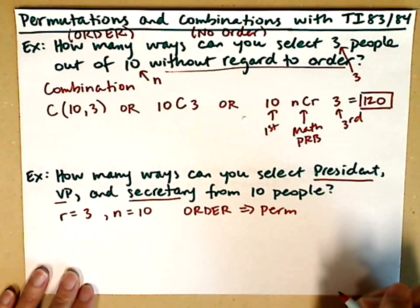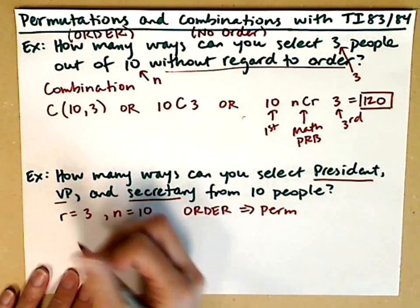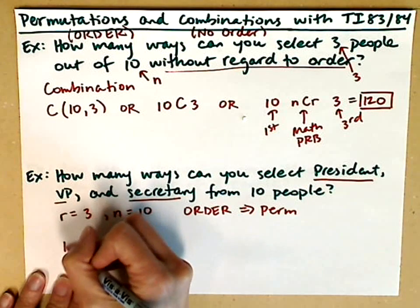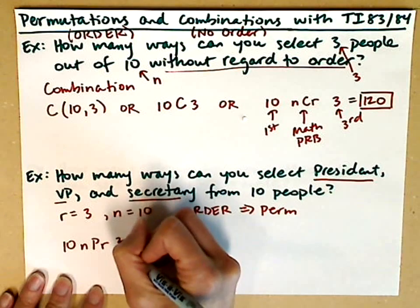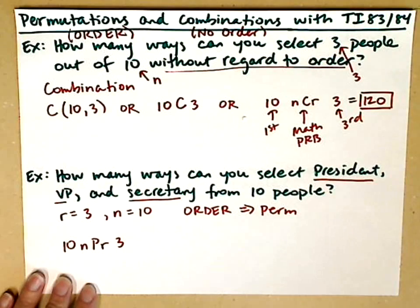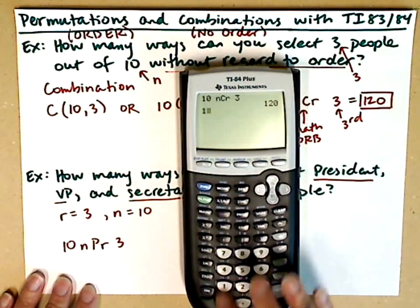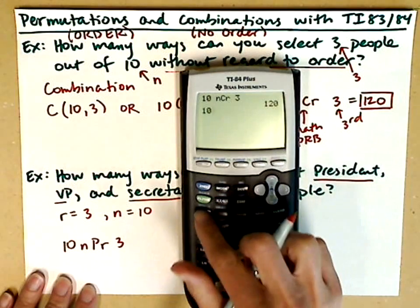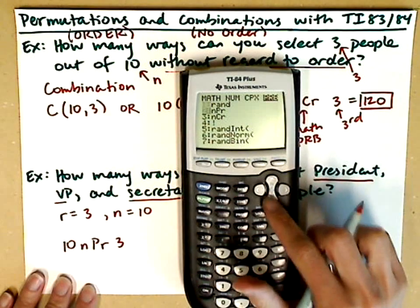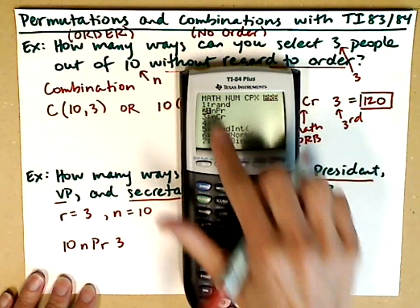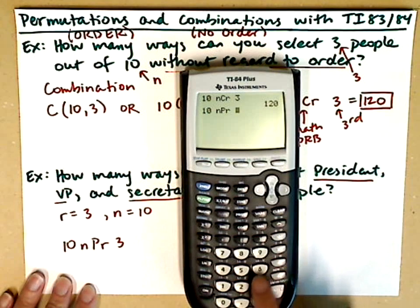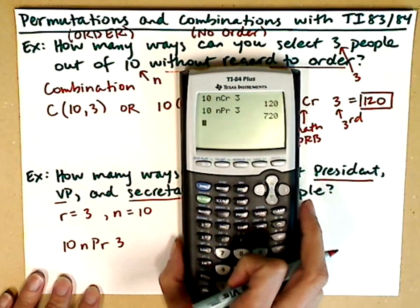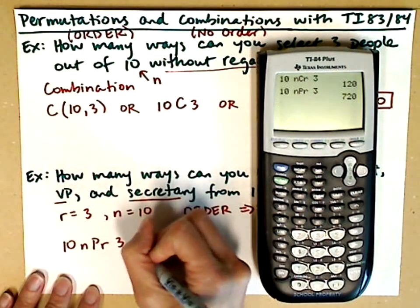The permutation is really similar to the combination with the calculator. We start with the N value, which is 10, we want the permutation symbol, which is nPr, and then we follow that with 3. Typing this into our calculator, we'll take 10, go to the math menu, the probability submenu, down to number 2, which is NPR. I arrow down, you can also hit number 2, hit enter, and now I'm ready for the 3. So we've got 10 nPr 3, hit enter, and we find that the number of ways is 720.